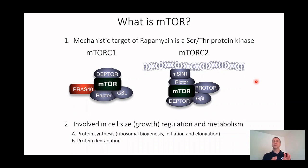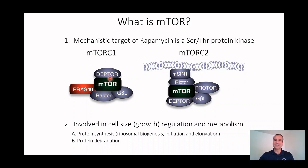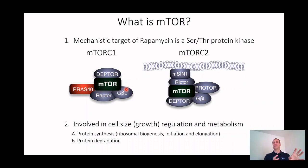This protein, the mechanistic target of rapamycin, is a serine-threonine protein kinase — meaning it's an enzyme that decorates serines and threonines with phosphate groups that negatively charge these amino acids. Interestingly, mTOR comes in two complexes, basically two flavors of the same thing. The things that are the same in both complexes include mTOR itself, and also the proteins GβL and DEPTOR, which are scaffolding proteins that hold the structures together.